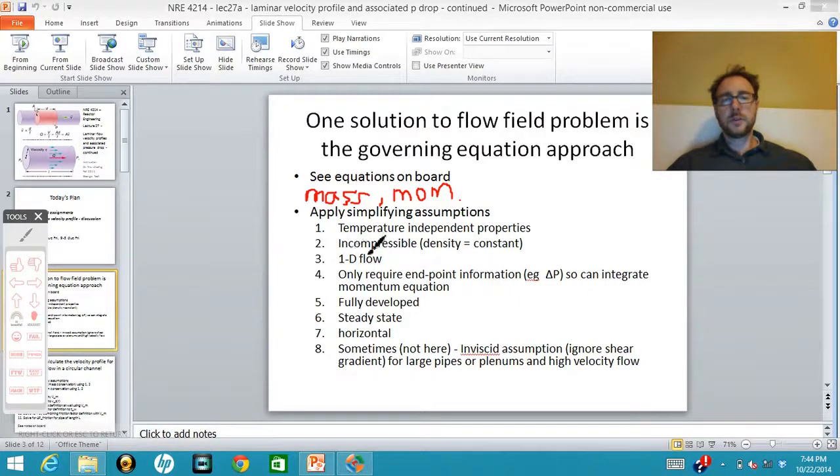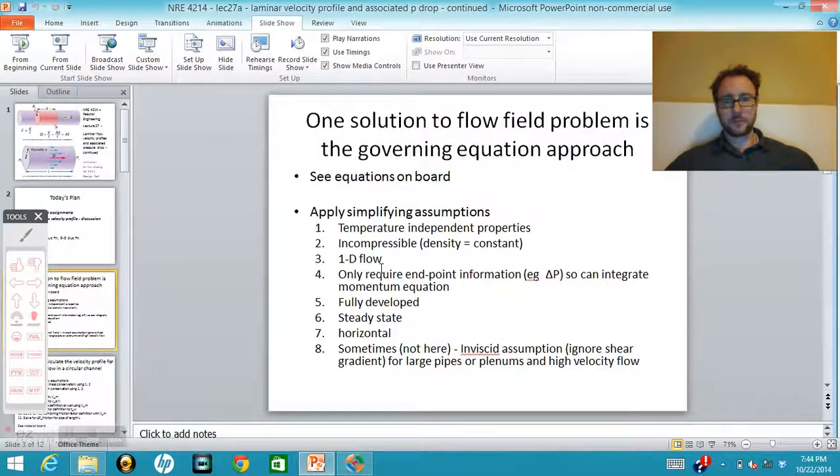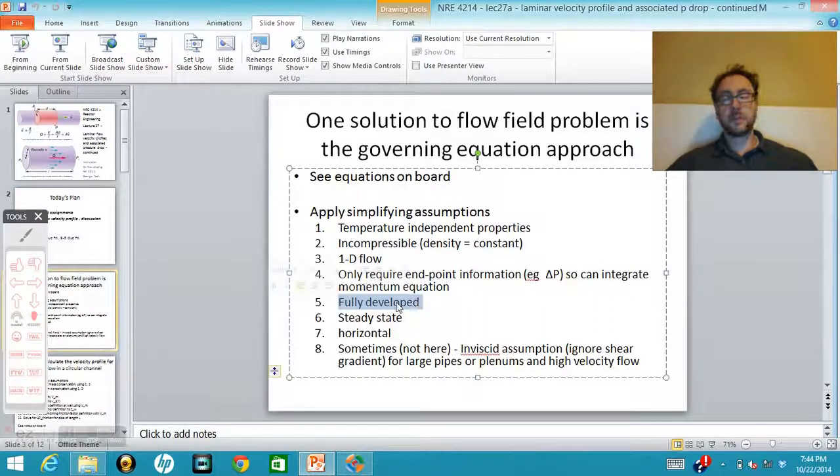We were assuming it is flowing in only one dimension. We had the r, theta, and z directions. The fluid is only flowing in the z direction. We're also assuming that this flow is already fully developed and flowing at steady state, so we don't have changing conditions.